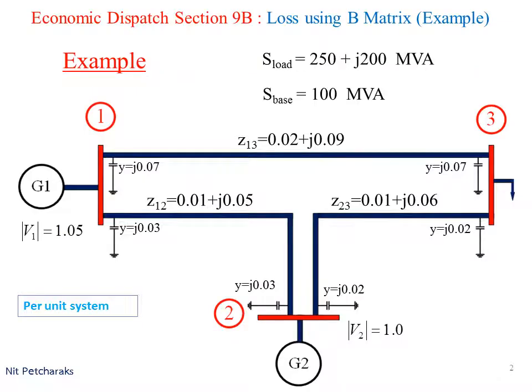Suppose there are three buses with two generators at bus 1 and bus 2. Let bus 1 be the swing bus, bus 2 be the voltage control bus, and bus 3 be the load bus. The voltage magnitude at bus 1 is 1.05 per unit, whereas that of bus 2 is 1.0 per unit.